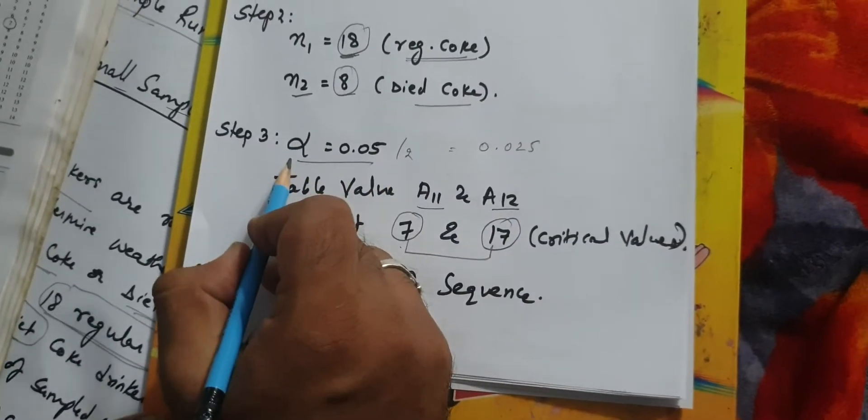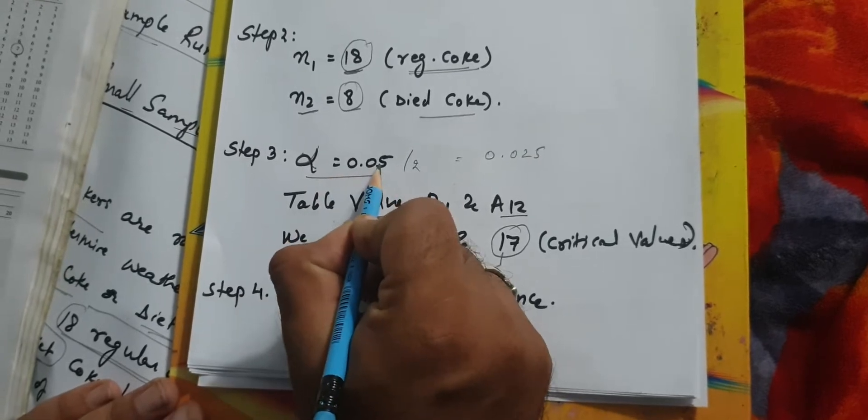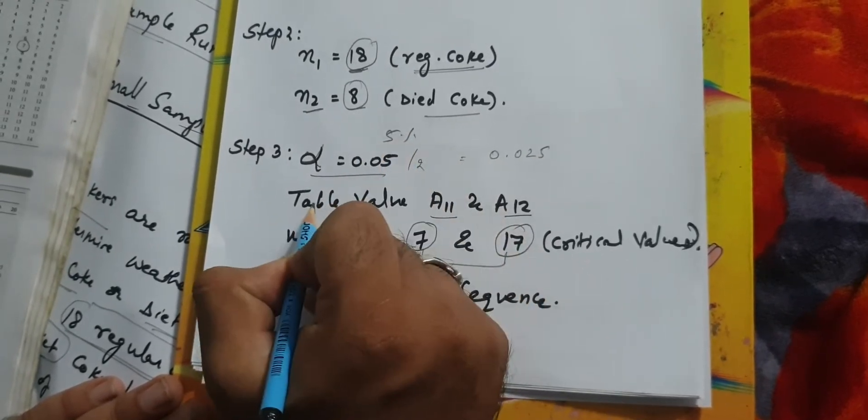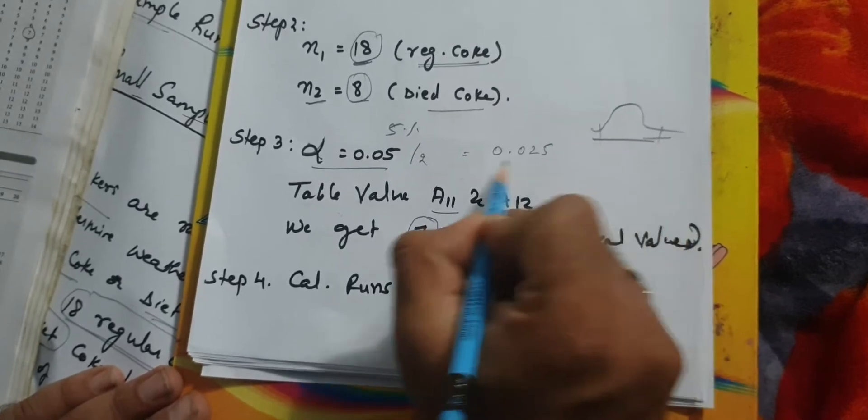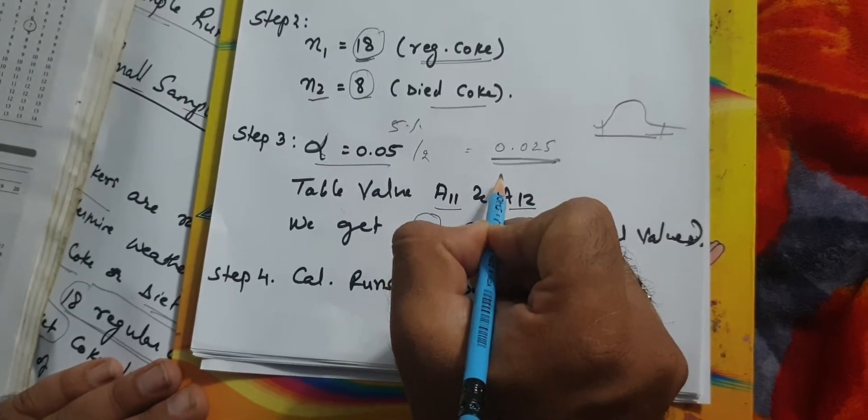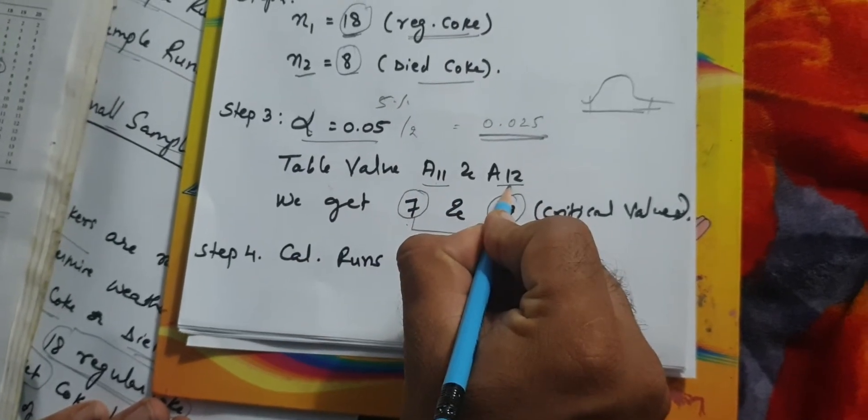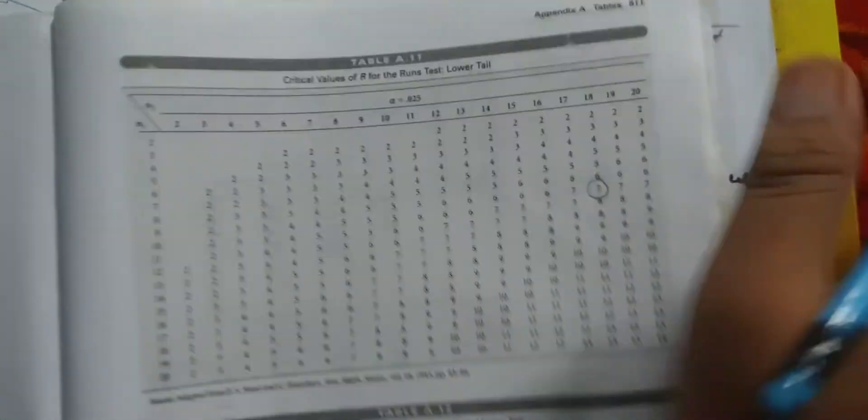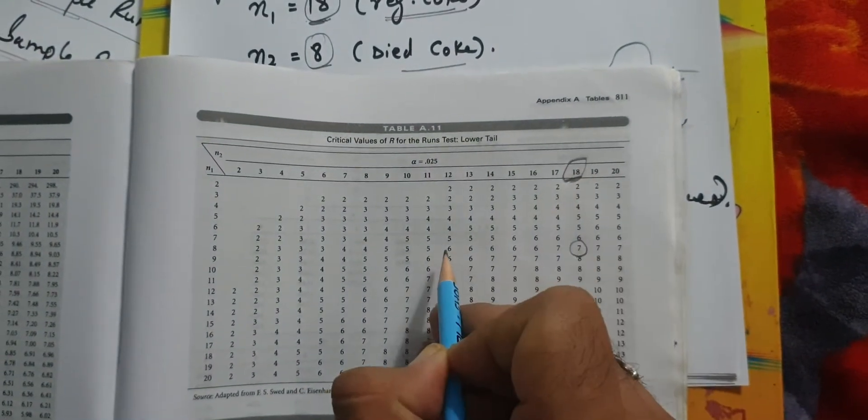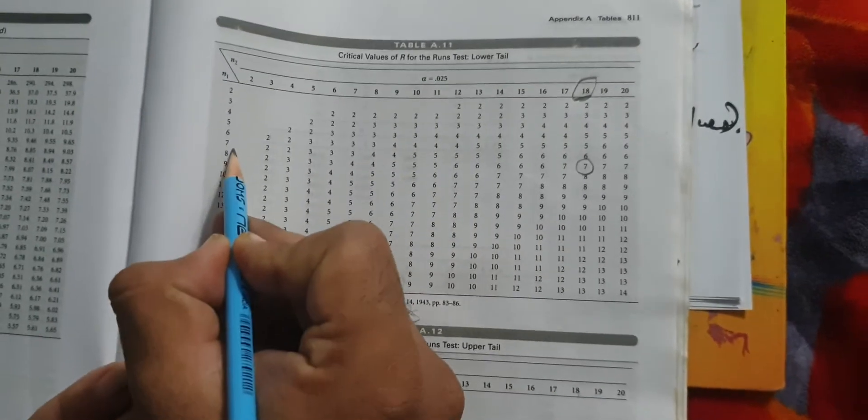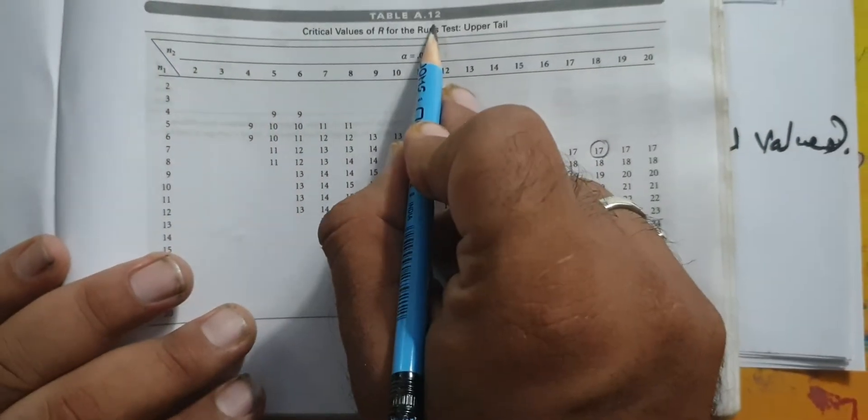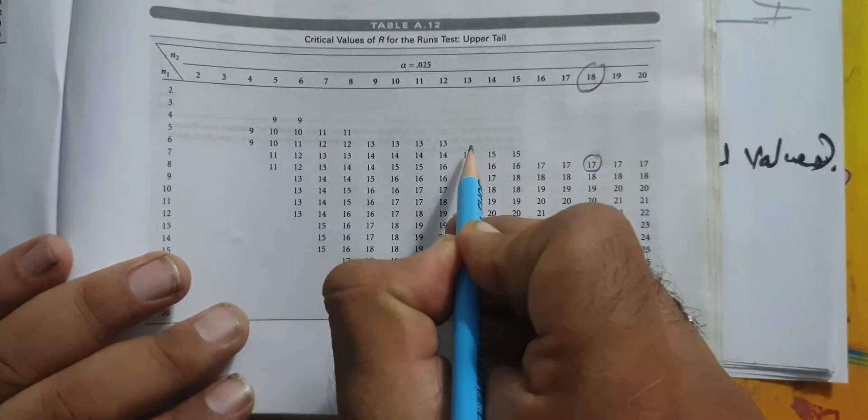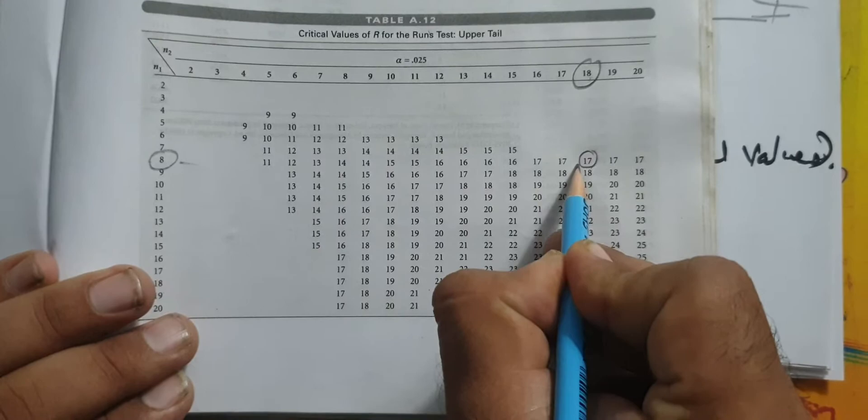Step 3 is very easy. The alpha value is 0.05, that is 5% confidence interval. For two-tail, it is divided by 2, which is 0.025. Now we need to see table A11 and A12. My N1 is 18 and N2 is 8. When you see this, it gives me the numbers 7 and 17. These are the critical values from the tables.